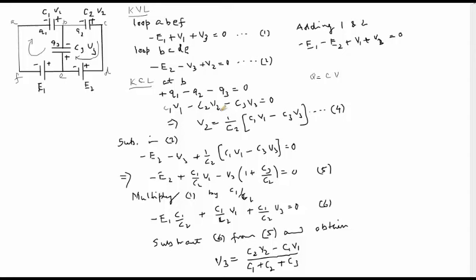Now we can solve for V2 and we get V2 equal to 1 over C2 times (C1 V1 minus C3 V3). So this I call as equation number 4. Now I substitute this in equation 2. If I do that then I get this equation and rearranging I get equation 5. So if I take V3 common then I get this term in the bracket. And the factor for V1 is C1 divided by C2.